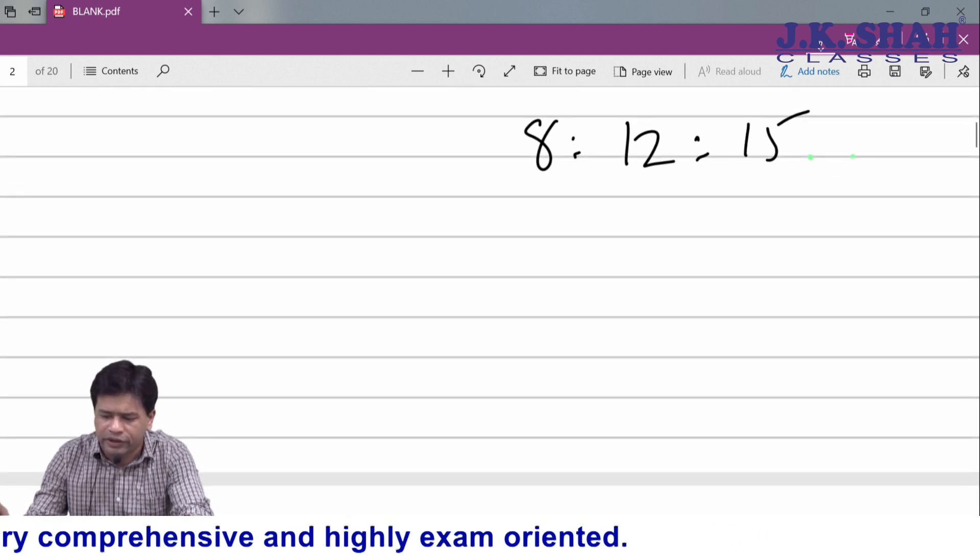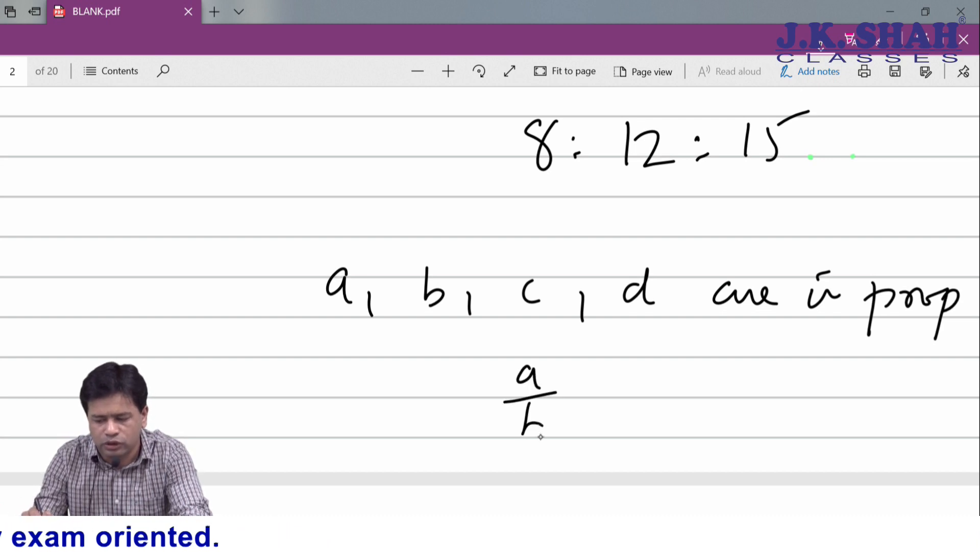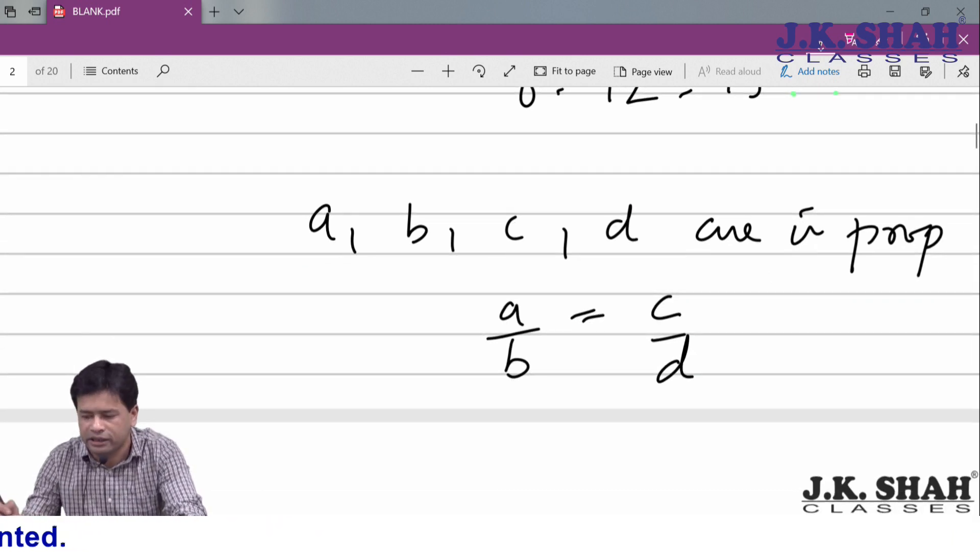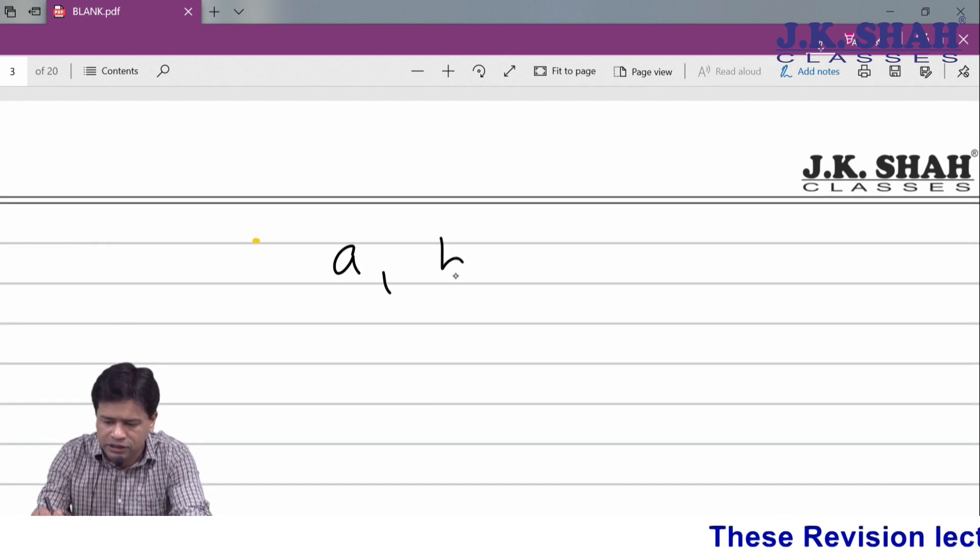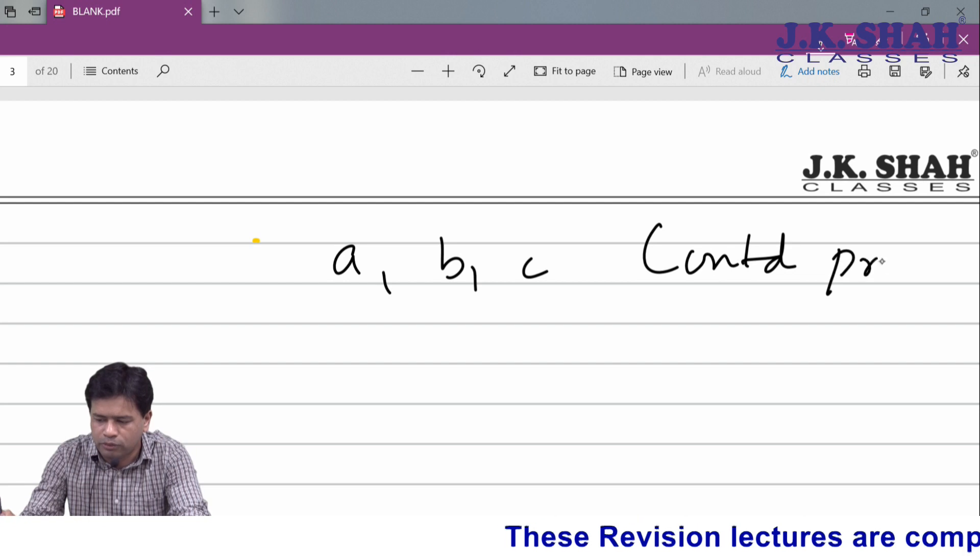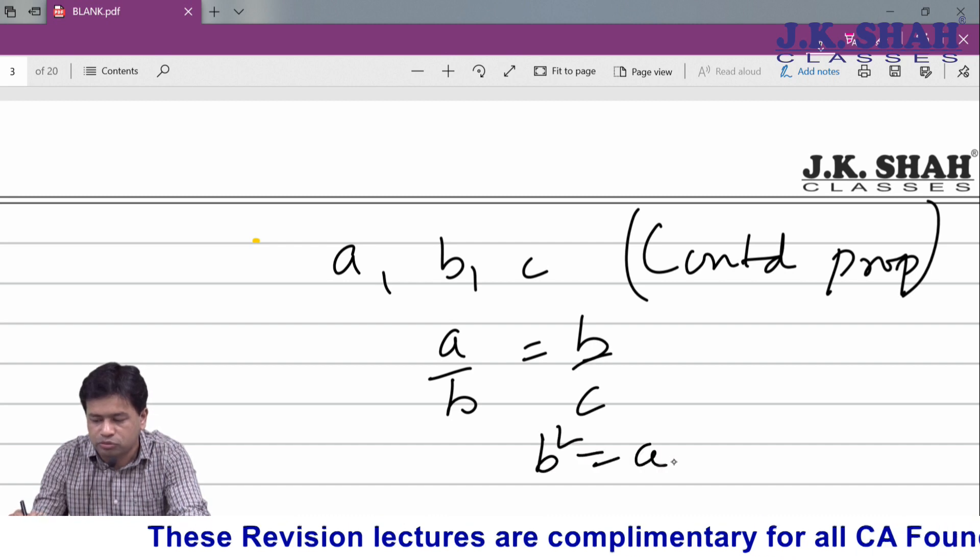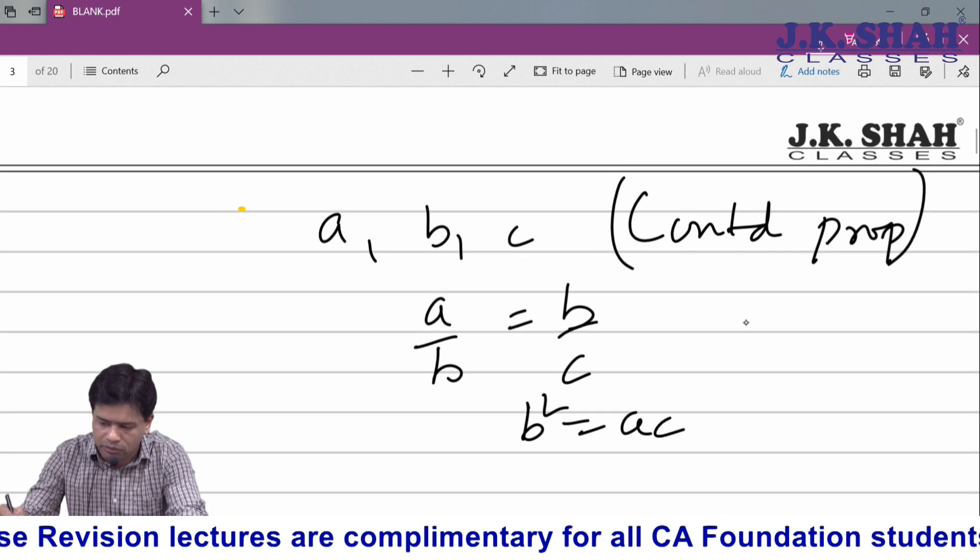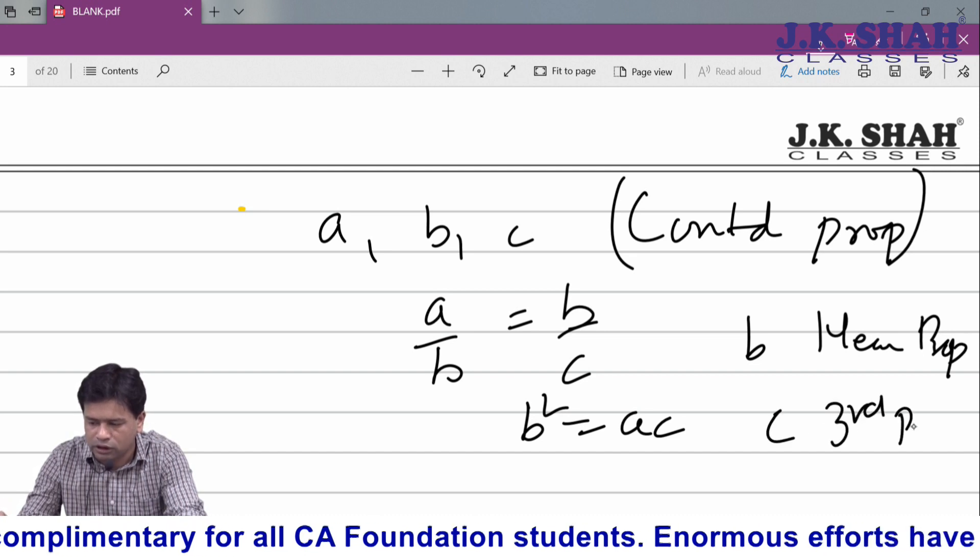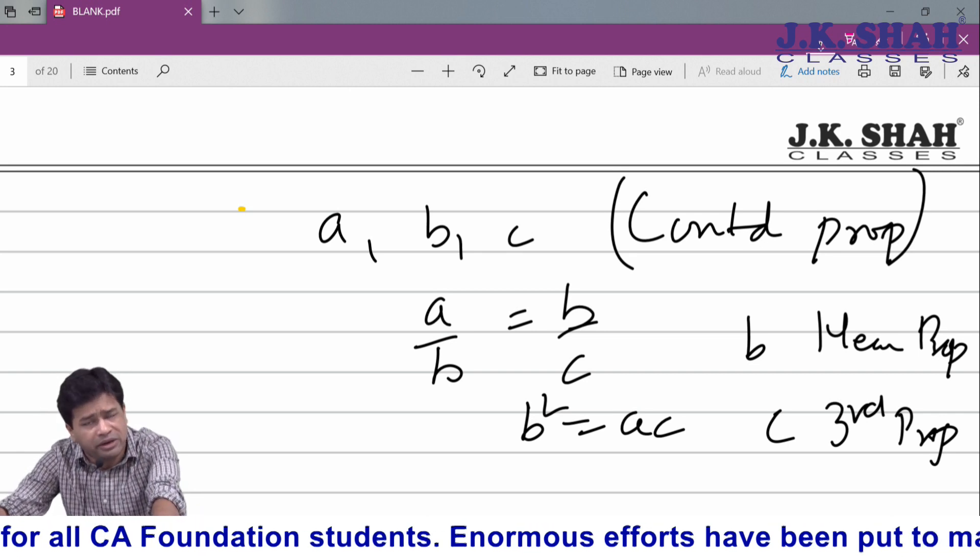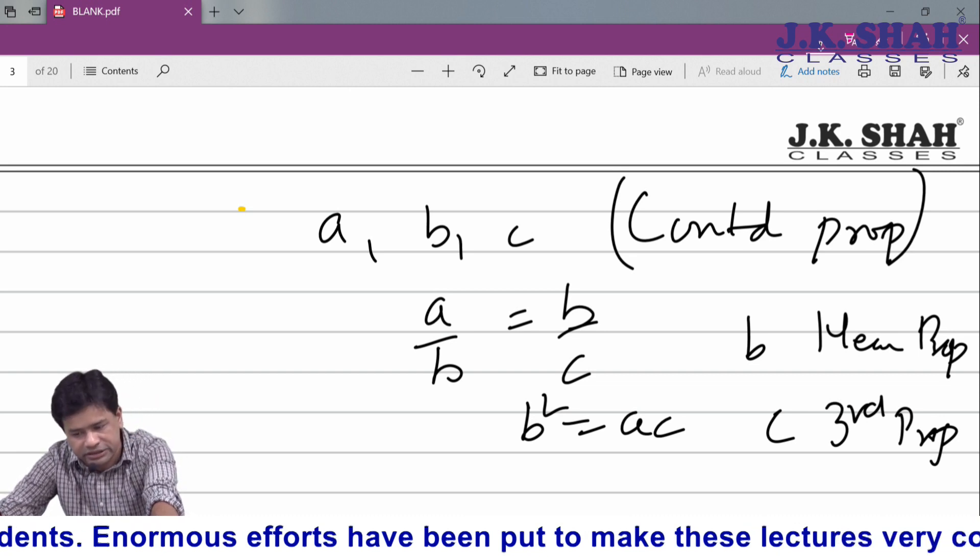If a, b, c, d are in proportion, then we know since school days that a upon b equals c upon d, where d is called the fourth proportional. If a upon b equals b upon c, that is b squared equals ac, then b is called the mean proportional and c is called the third proportional. When solving a question where I'm asked to find the mean proportional, I will take the third number as x.